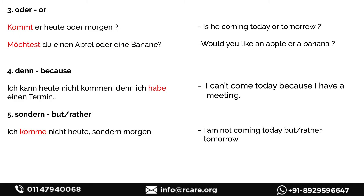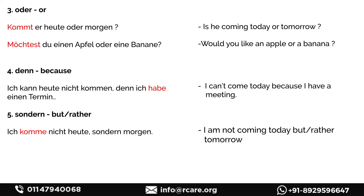You must have observed that the subordinating conjunction 'weil' also means 'because,' and the coordinating conjunction 'denn' also means 'because.' There is completely no difference in meaning — you can use them interchangeably. The only thing to remember is: when using the coordinating conjunction 'denn,' the verb will be at the second position, but if you use subordinating 'weil,' the verb goes to the end. The last example is 'sondern' (but rather): 'Ich komme nicht heute, sondern morgen' — I am not coming today but rather tomorrow.